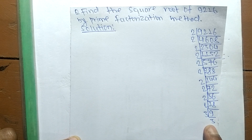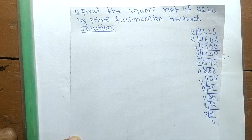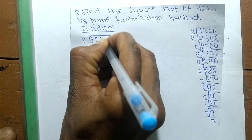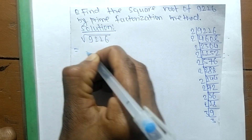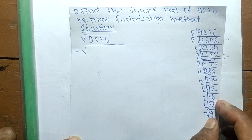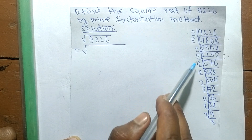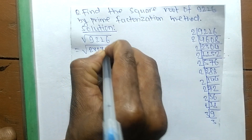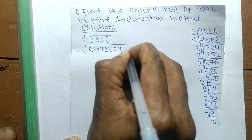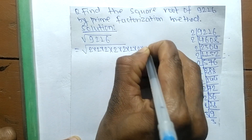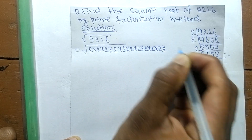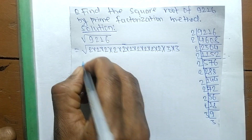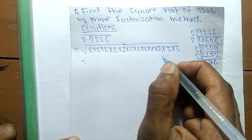Now we are finding the square root of 9216. From these prime factors we can write: 1, 2, 3, 4, 5, 6, 7, 8, 9, 10 times 2 — that is 1, 2, 3, 4, 5, 6, 7, 8, 9, and 10 times 2 — like as 3 times 3. From all these prime factors we now make the square root.